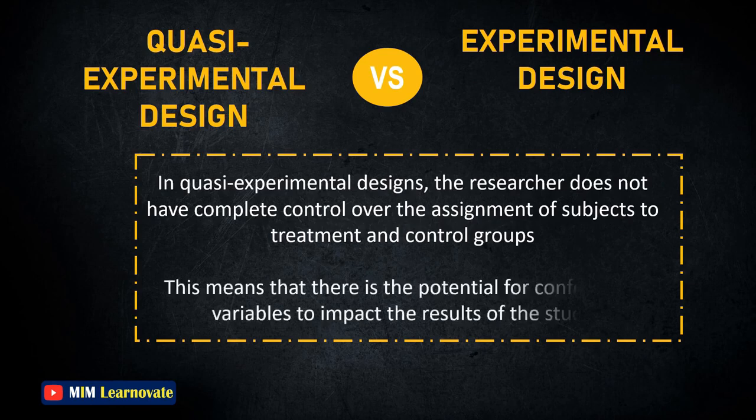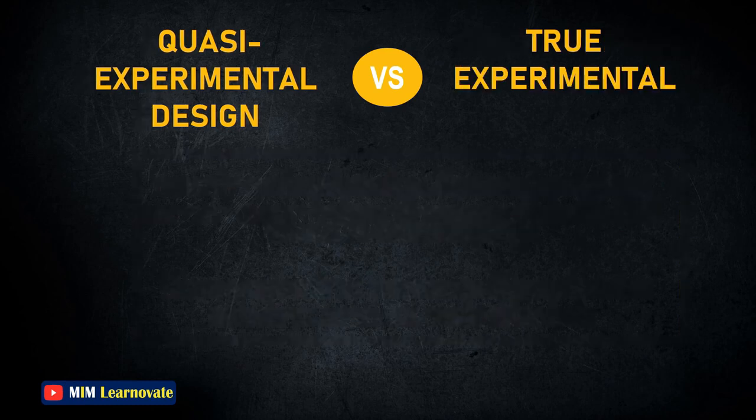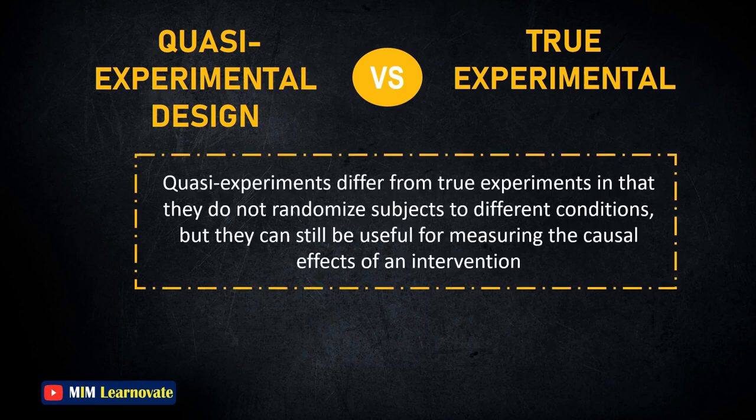This means there is the potential for confounding variables to impact the results of the study. Quasi-experiments differ from true experiments in that they do not randomize subjects to different conditions, but they can still be useful for measuring the causal effects of an intervention.